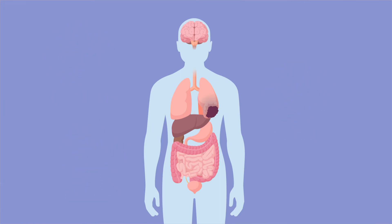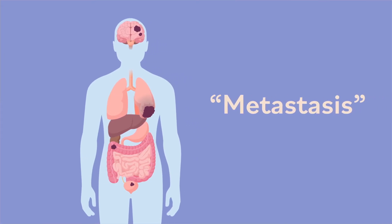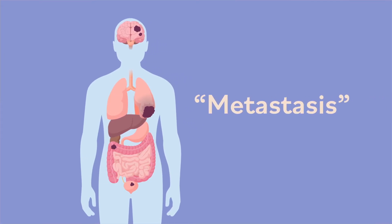Sometimes cancer cells break off from the original tumor and spread to other areas of the body. This is called metastasis, and these cells form new tumors called metastases. Metastases are also called secondary cancers because they started from the first, or primary, cancer.